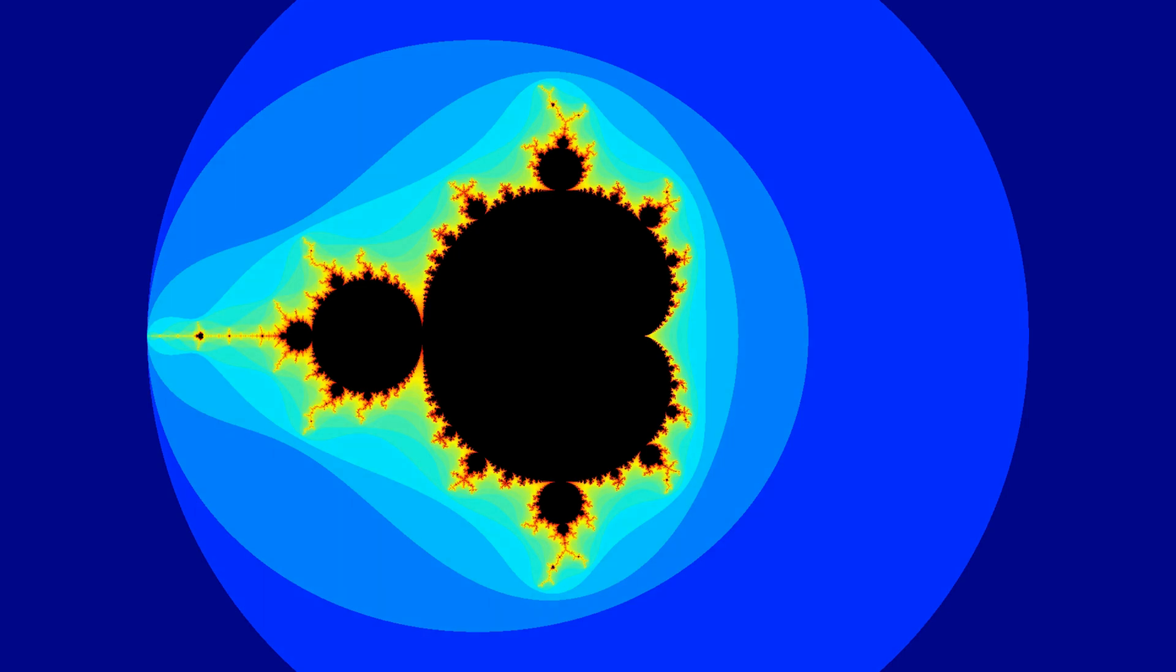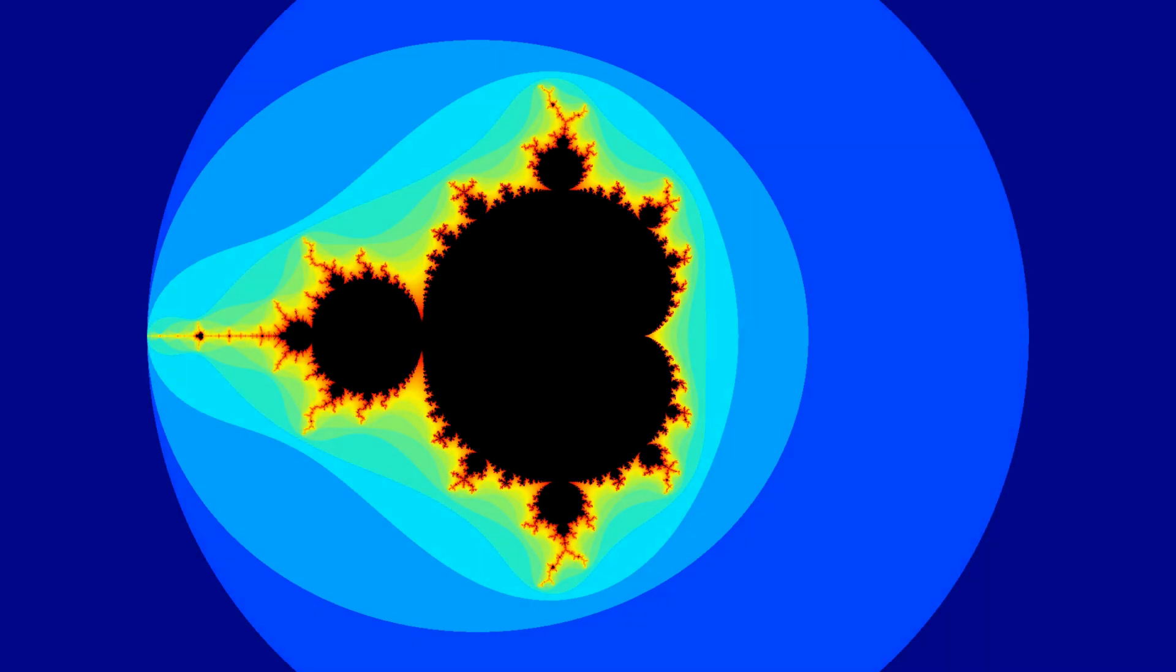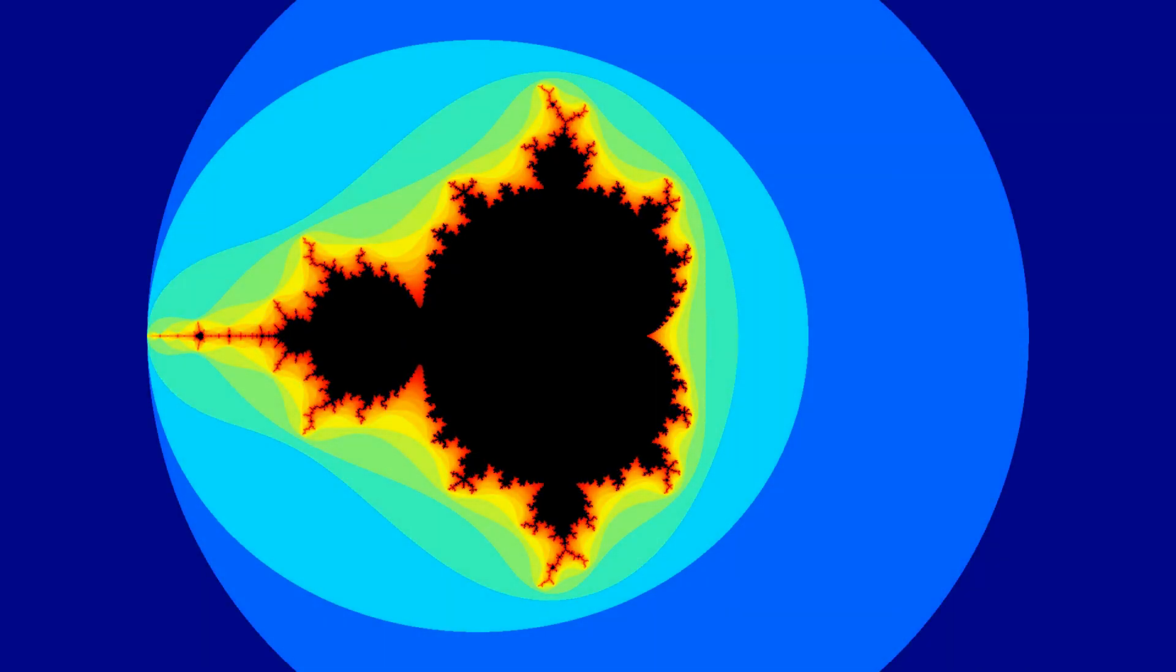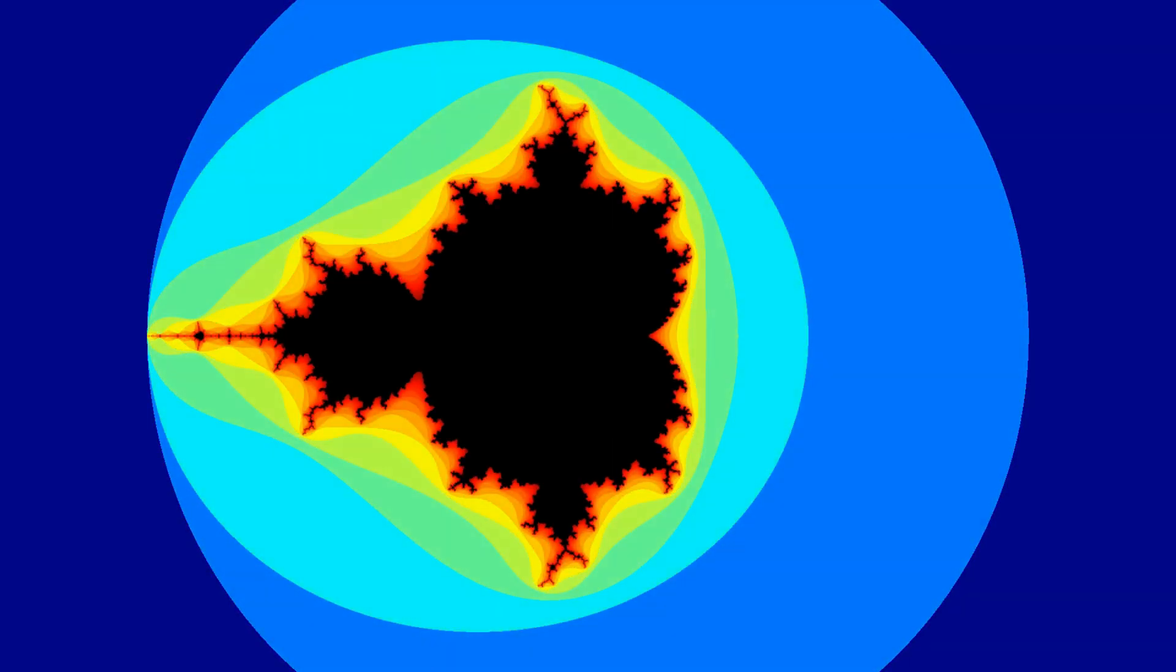This video serves as a demonstration of how the Mandelbrot landscape looks like with different amounts of considered iterations. To demonstrate this, we will zoom in on a particular location on the Mandelbrot landscape with different amounts of considered iterations.